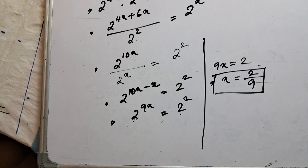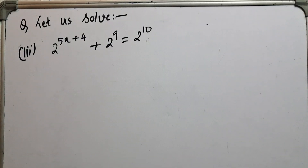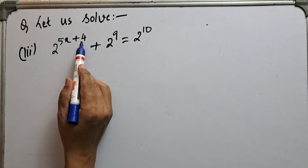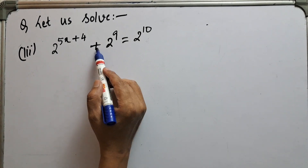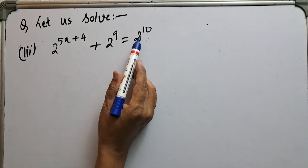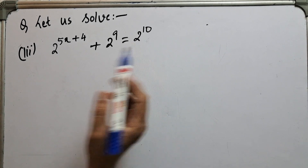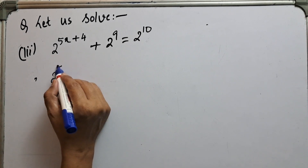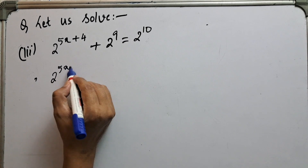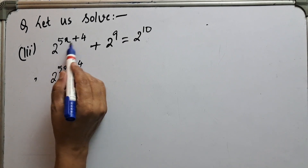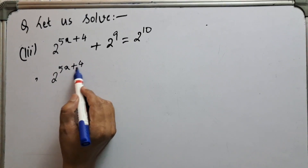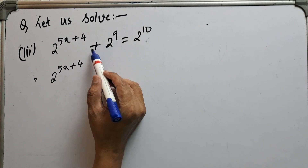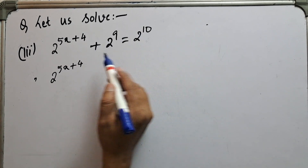Now let's do the last question. We have the equation: 2 to the power 5x plus 4, plus 2 to the power 9, equals 2 to the power 10. Let's solve this equation.